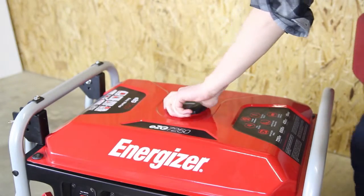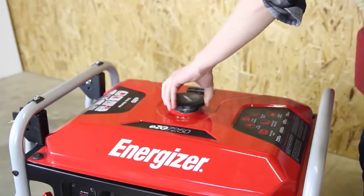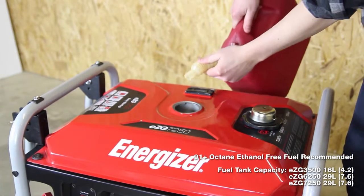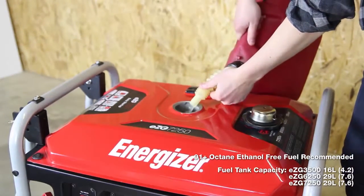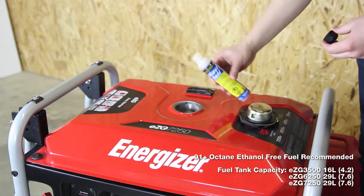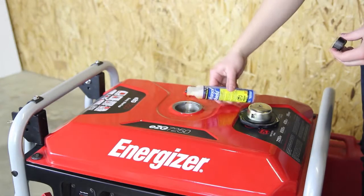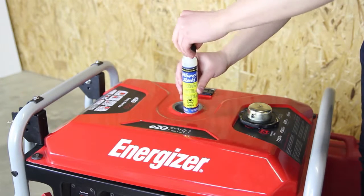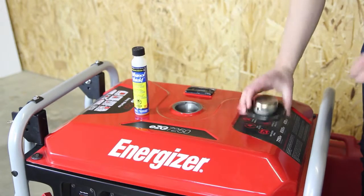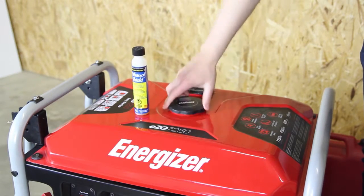Check the fuel level by removing the fuel tank cap to visually check the level. Refuel if the level is too low. Add ethanol shield with the fuel tank as directed on the bottle. Replace the fuel tank cap and tighten securely.